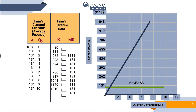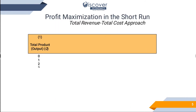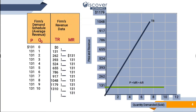Marginal revenue is the same for all units of production. The average revenue equals total revenue divided by quantity. Now let me go back to the previous slide.